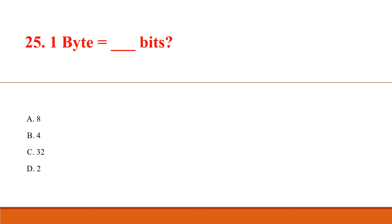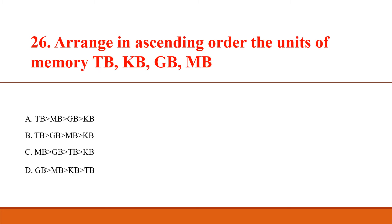One byte is equal to how many bits? Answer Option A: 8. Arrange in ascending order the units of memory: Terabyte, Kilobyte, Gigabyte and Megabyte. Answer Option B: Kilobyte, Megabyte, Gigabyte, Terabyte.